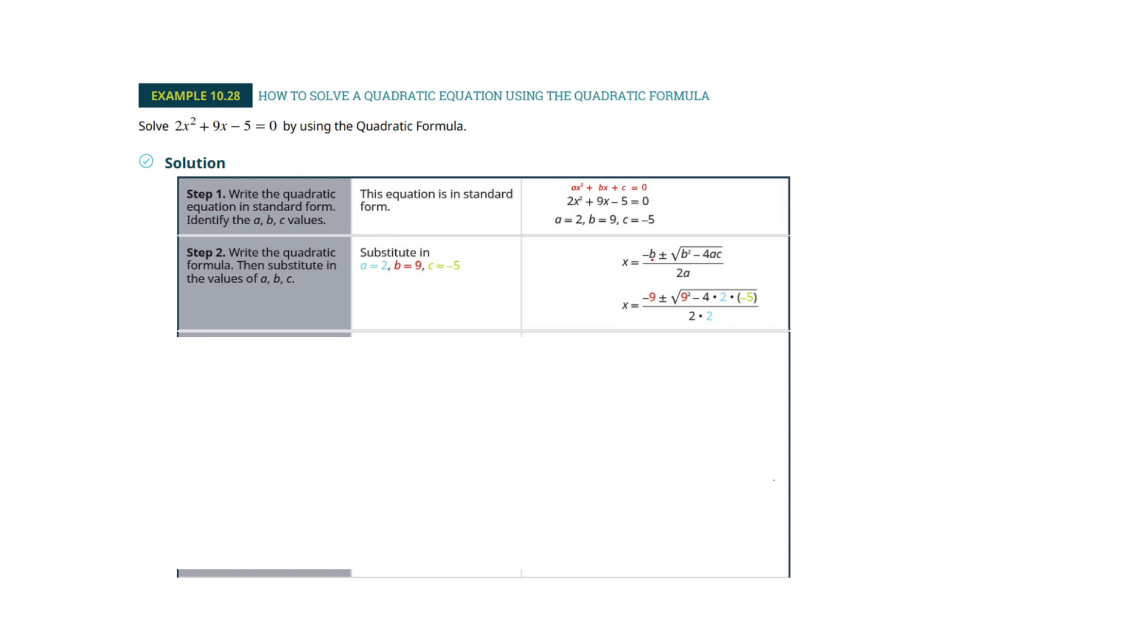So we're just going to plug in. So the formula is negative b. Okay, well, b is 9, so negative 9. Plus or minus the square root of b squared. Okay, well that's 9 squared. Minus 4, it's always 4, times a, which is 2. C is negative 5. All over 2a. I know that sounds terrible to memorize, but you get used to it. You do so many of these, it's pretty easy.